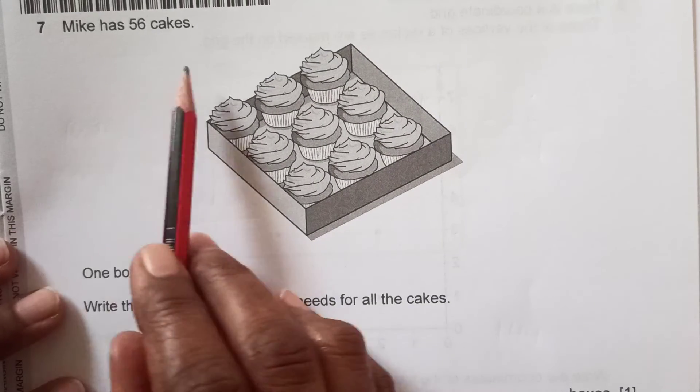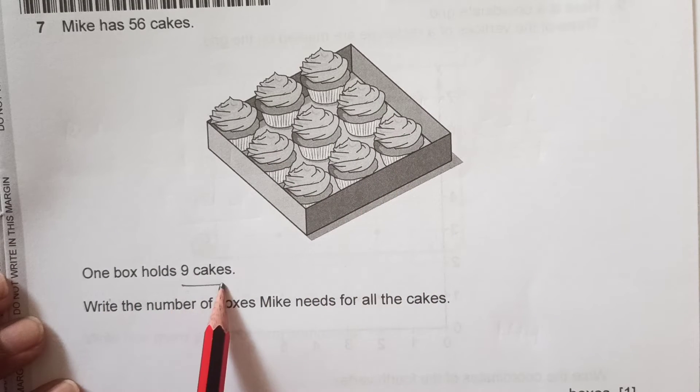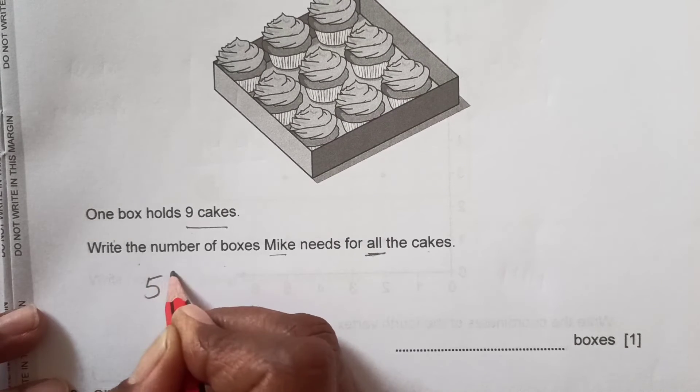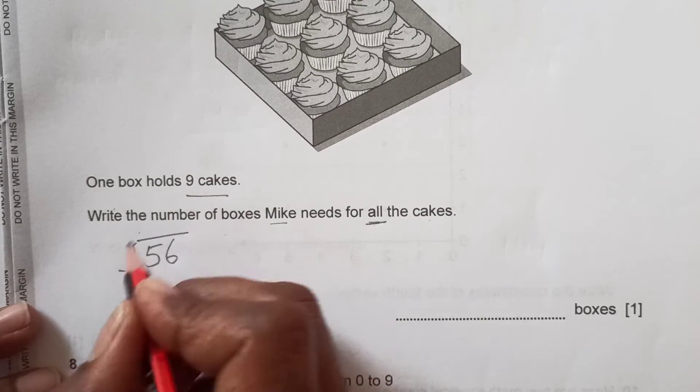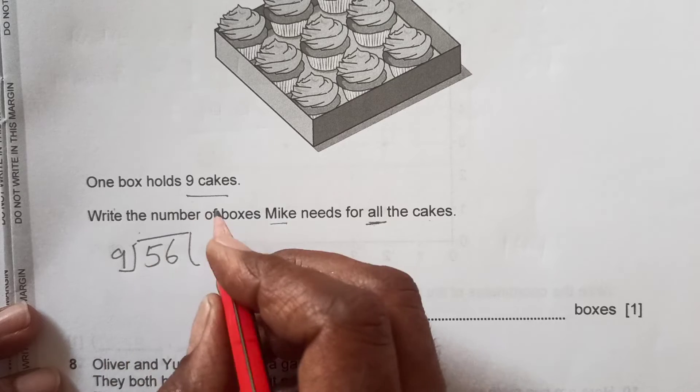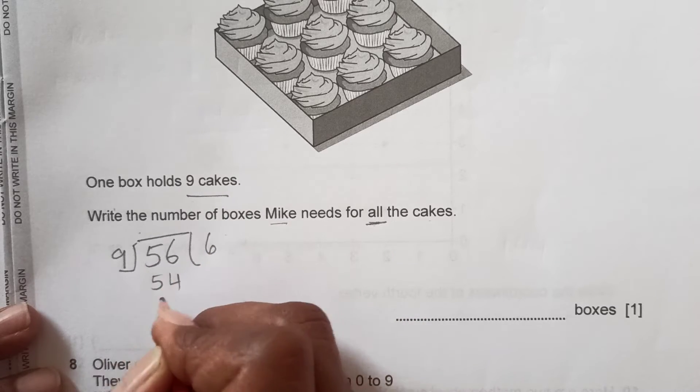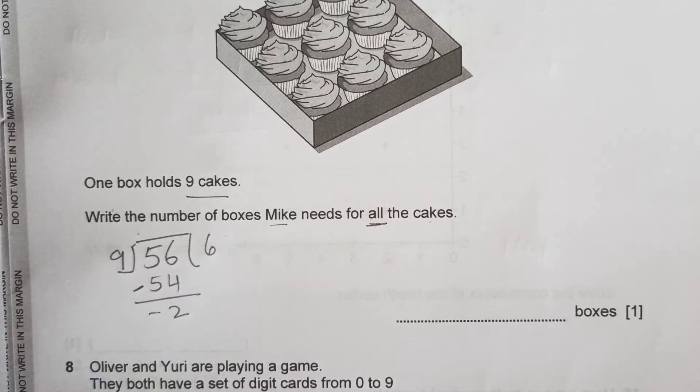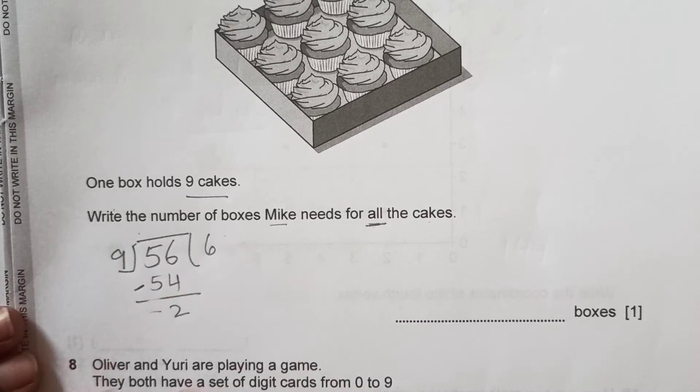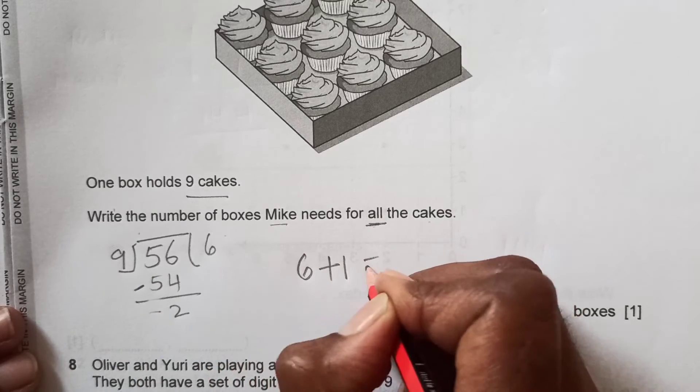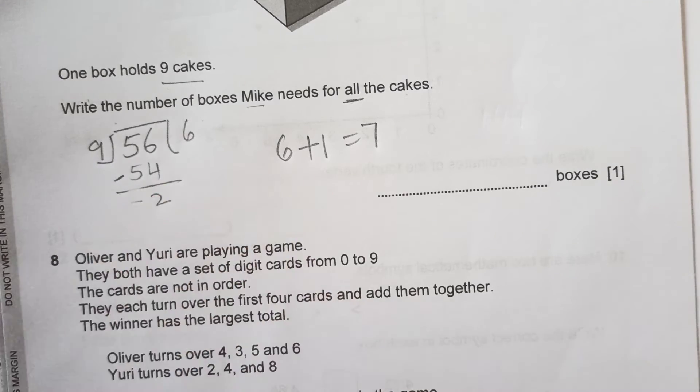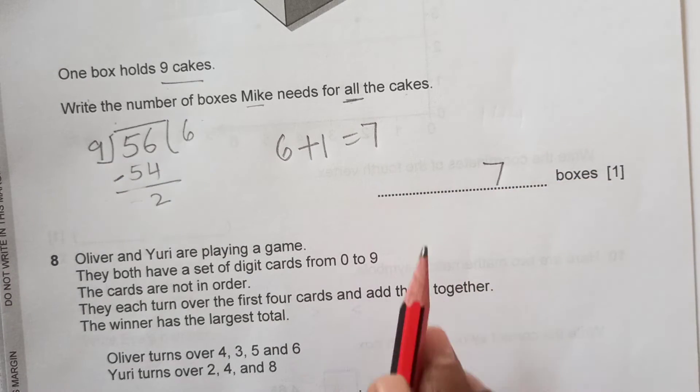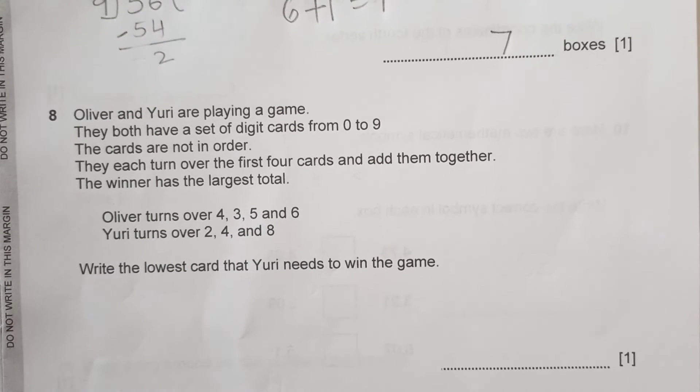Number 7: Mike has 56 cakes. One box holds 9 cakes. Write the number of boxes Mike needs for all the cakes. We will divide: there are 56 cakes to put in the box. One holds 9. So let's see, 9 times 6 is 54. If he puts 6 boxes, then 2 of the cakes will remain. So still he has to put that in there, so he needs to have 6 boxes plus 1 more to put the remaining 2 cakes. So the final answer is going to be 7 boxes.